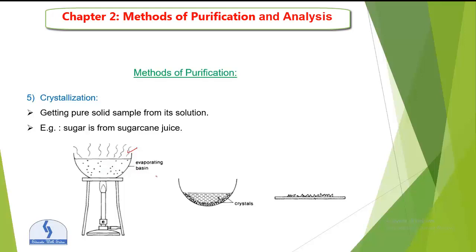We remove the solution from the burner and cool it at room temperature. The dissolved solid will then form as pure crystals. You can dry the crystals on filter paper. This is the procedure of crystallization — here we are separating solid from liquid and getting pure crystals, whereas in evaporation we do not get a pure residue.